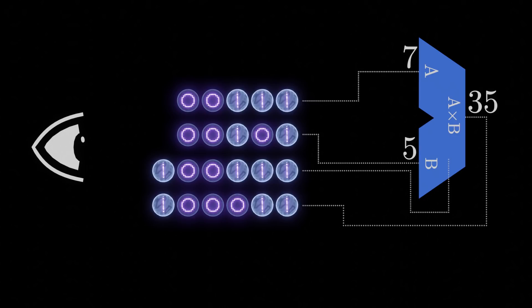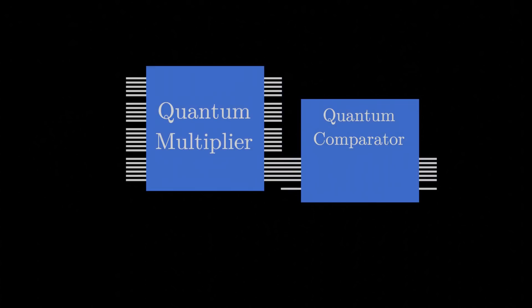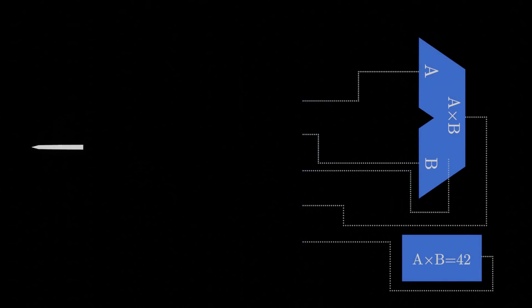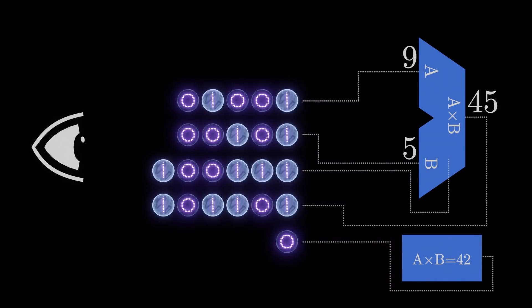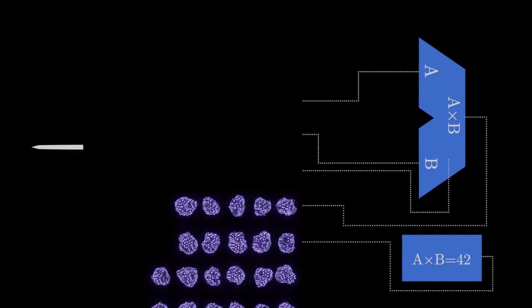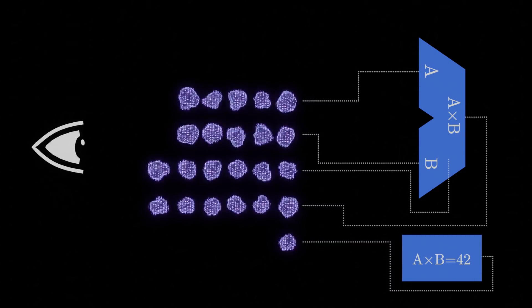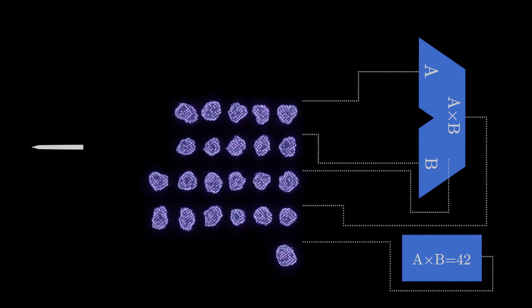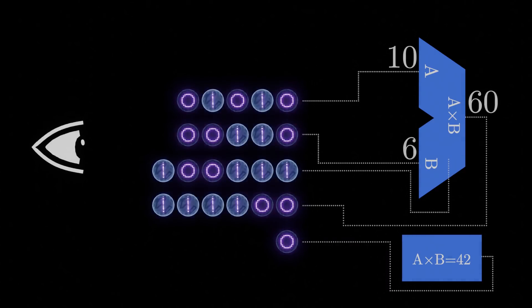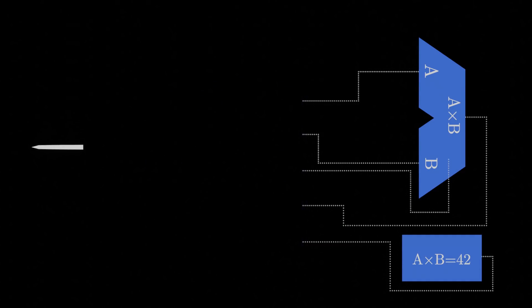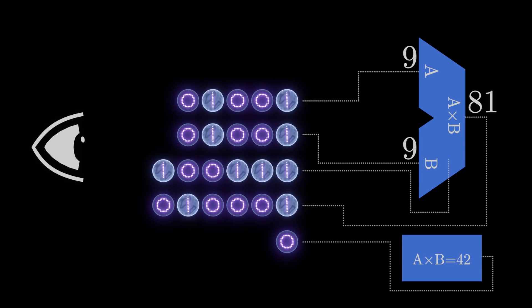We could also add to this some additional gates to check if the output of the multiplication is equal to some value. For this example, we'll pick the number 42. If we observe the qubits at this point, we would find that they often describe a multiplication which results in some number other than 42, and so the qubit describing the output of the comparison circuit would often be observed as 0. But let's say we're really interested in this particular number, and we want to find what factors we can multiply to get it. This is where the final piece of our algorithm comes in.